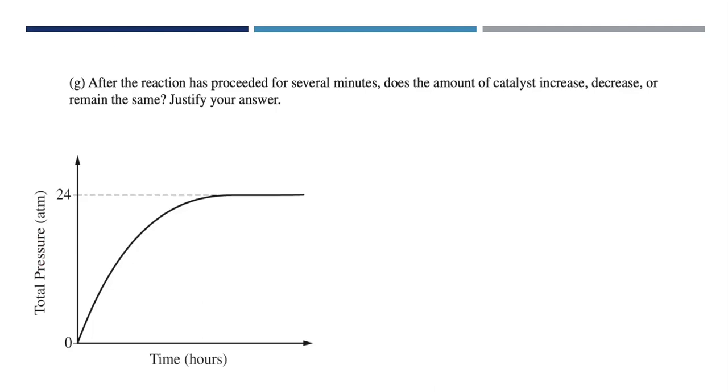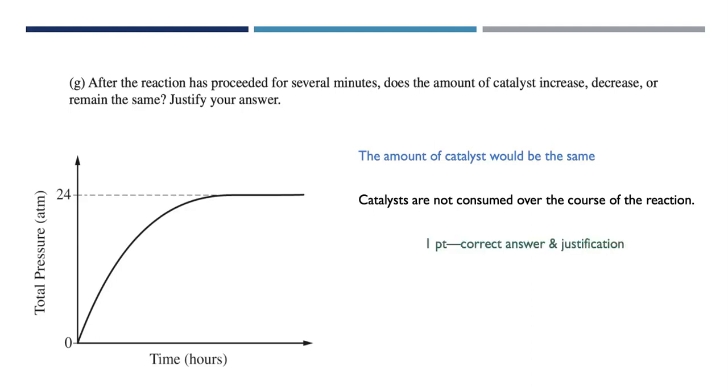Justify your answer. Well, if you think about the definition of a catalyst, if you think back to your kinetics unit, the hallmark of a catalyst is you get it back in its original form at the end of the reaction. The amount of the catalyst would be the same. They're not consumed over the course of the reaction. We get it back. That's essentially what you needed to say to earn the point for part G. In terms of the scoring for part G, it was one point for a correct answer with a justification.